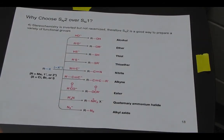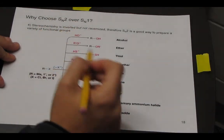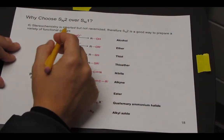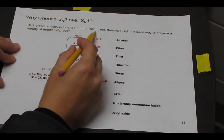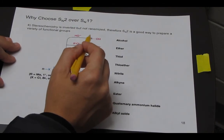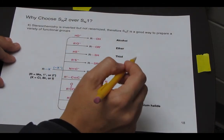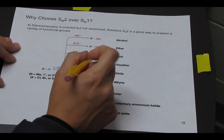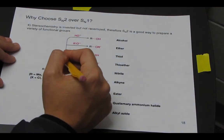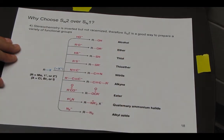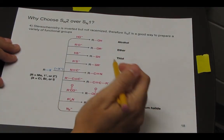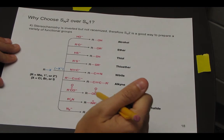Before we get to some practice problems, why would we want SN2 over SN1? Because we're learning both at this time. And so in general, SN2 is favored because the stereochemistry is inverted but not racemized. Remember, with SN1, you can get attack from either face of the carbocation. But for SN2, you always get inversion. And so it's a good way to prepare a molecule.